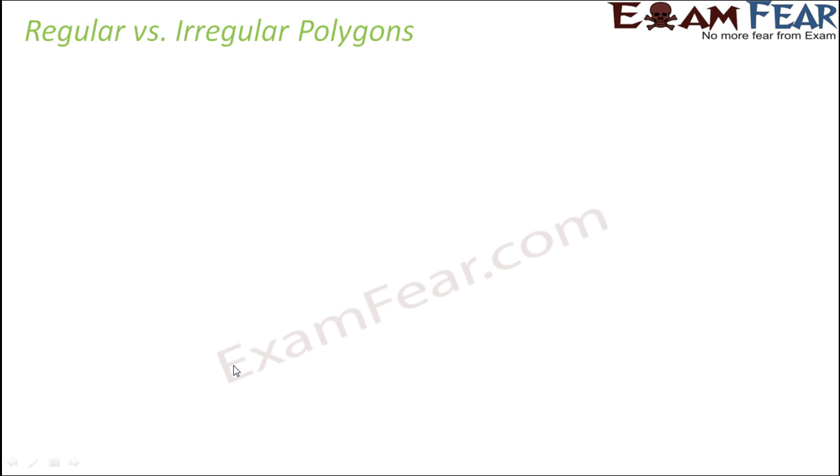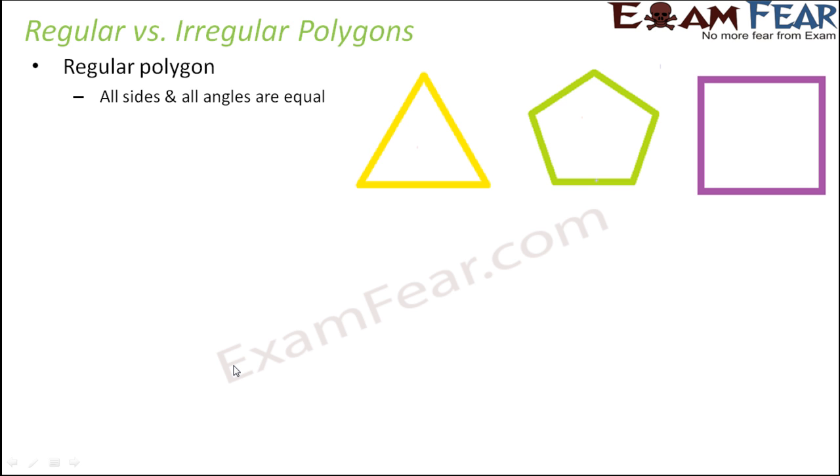Now let's talk about regular and irregular polygons. So when we talk about polygons there are two categories again. Regular polygons where all sides and all angles are equal. So can you tell me an example of a regular polygon which we have discussed some time back? Absolutely. Equilateral triangle.